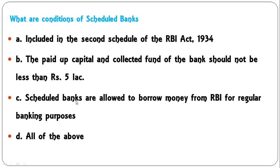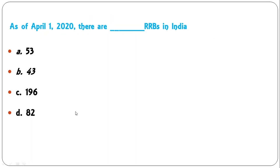What are the conditions for scheduled banks? Included in the second schedule of the RBI Act 1934 — correct. The paid-up capital and collected funds of banks should not be less than five lakh rupees — correct. Scheduled banks are allowed to borrow money from RBI for regular banking purposes — correct. So all of the above are conditions for scheduled banks. D is the correct answer.